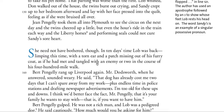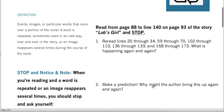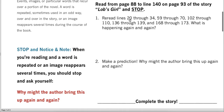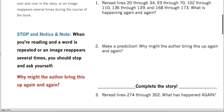So we're going to stop here at line 140 and reread lines 20 through 34, 59 through 70, 102 through 110, 136 through 139, and 168 through 173. What is happening again and again? To answer this question, you need to go on to the classroom page, bring up the actual reading, and find these spots and reread them yourself. Then you're going to answer number two: make a prediction. Why might the author bring this up again and again — these events that happen here at this time? Pause the video here and bring up that PDF so you can answer number one and two. Then, when you start the story back up again after pausing, we'll complete it together.